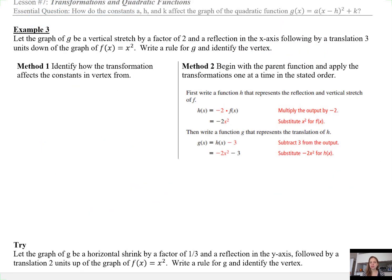Example 3: Let the graph of g be a vertical stretch by a factor of 2 and a reflection in the x-axis, followed by a translation 3 units down of the graph of f(x) = x². Write a rule for g and identify the vertex. In Unit 1, we just used method 2 to answer this problem, and method 2 is perfectly fine.